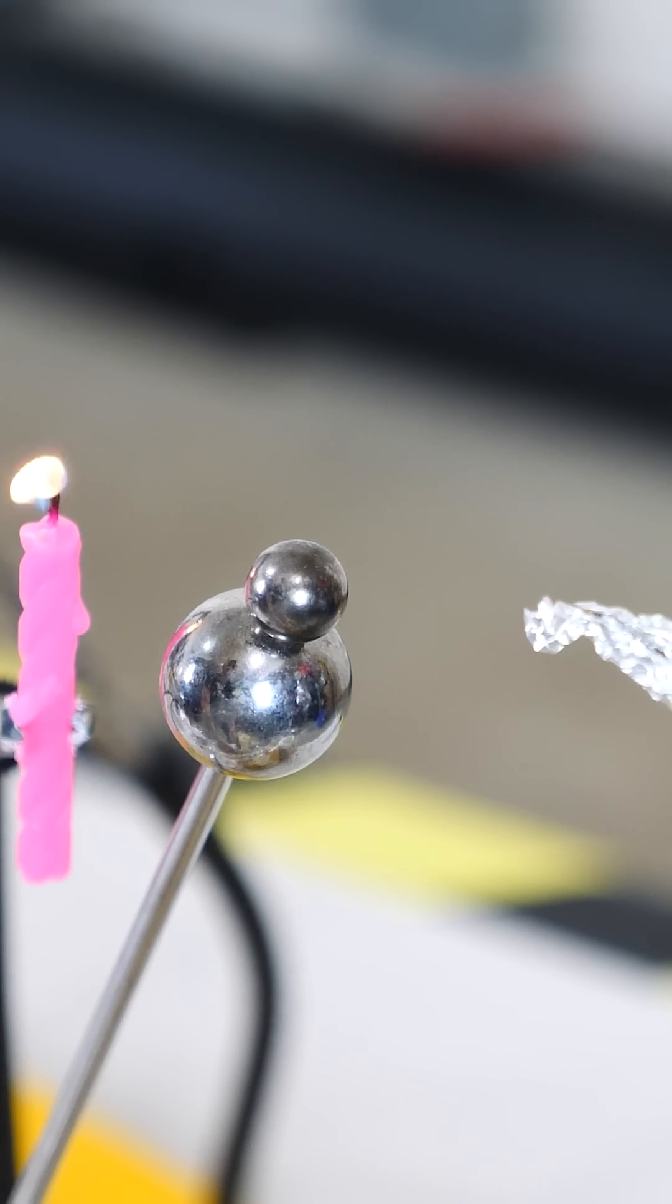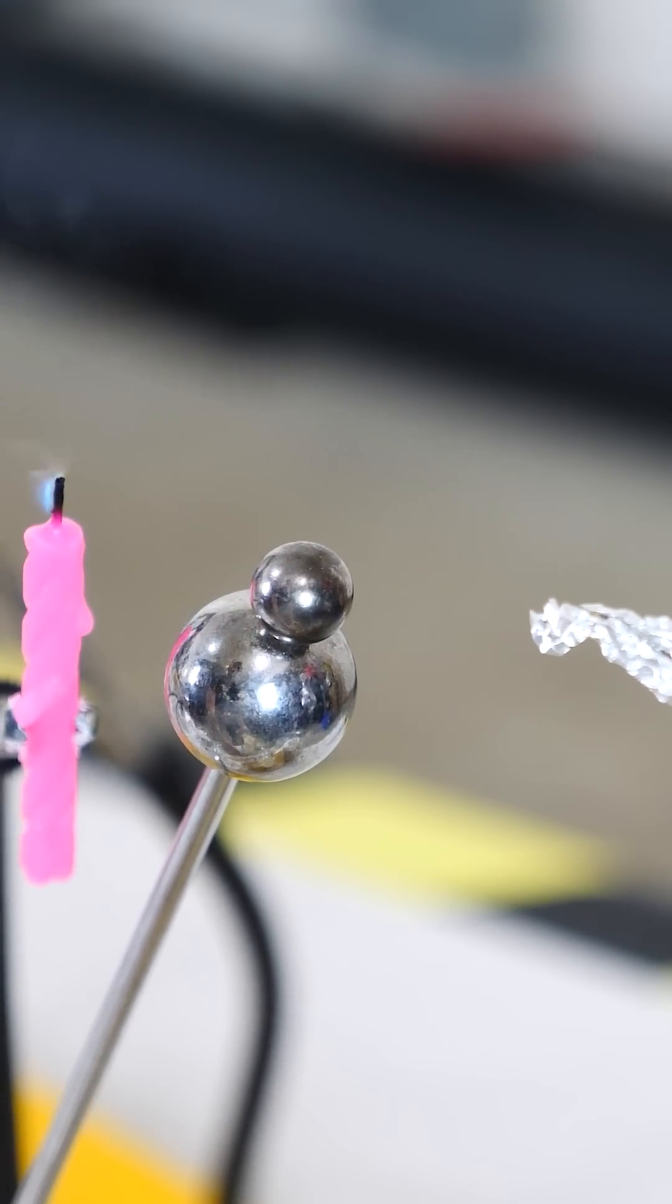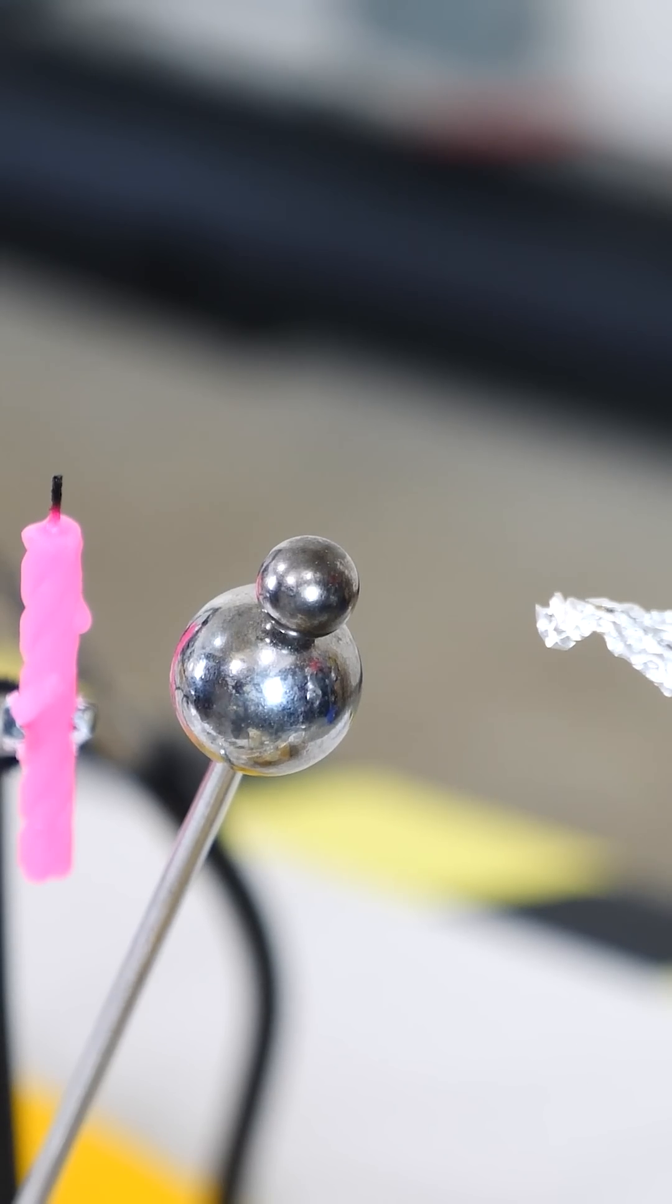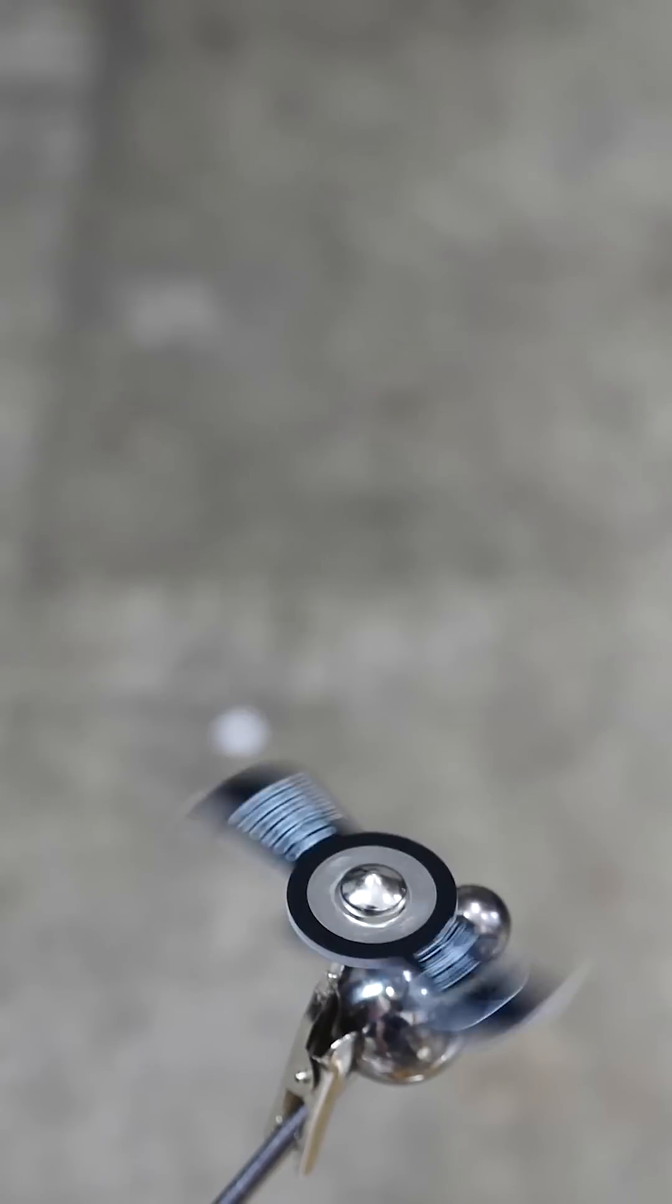This is a Wimshurst machine that generates thousands of volts. And it blew it out. You can even get sharp electrodes to spin in a circle.